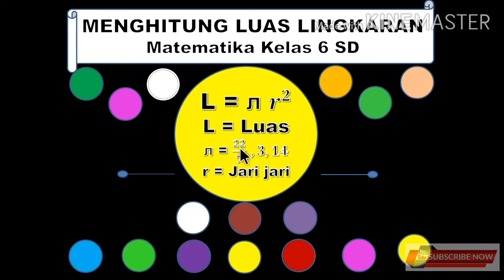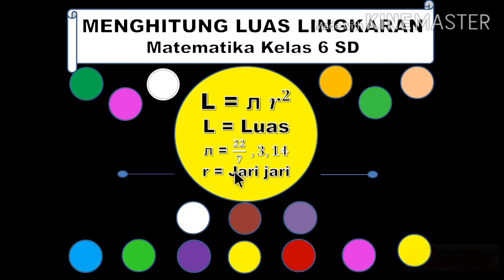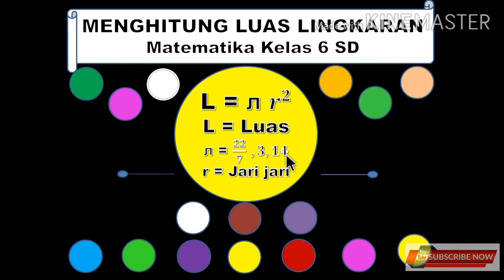Seperti 7, 14, 21, 28, dan seterusnya. Sedangkan apabila jari-jarinya bukan kelipatan angka 7, maka π yang kita gunakan adalah 3,14. Seperti angka 1, 2, 3, 4, 5, 8, dan seterusnya.